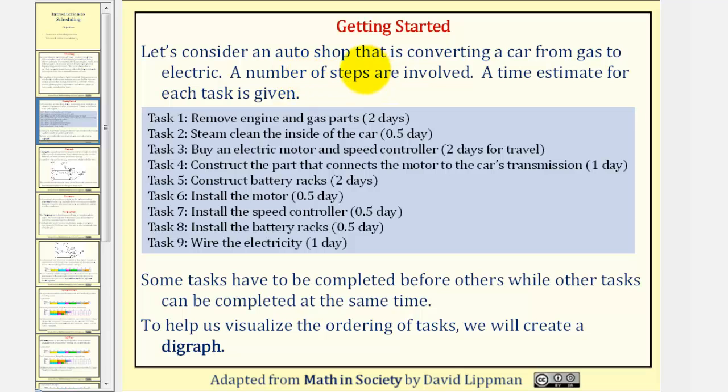Let's consider an auto shop that is converting a car from gas to electric. A number of steps are involved, a time estimate for each task is given. Notice we have a total of nine tasks and the approximate time to complete each task is given here on the right.